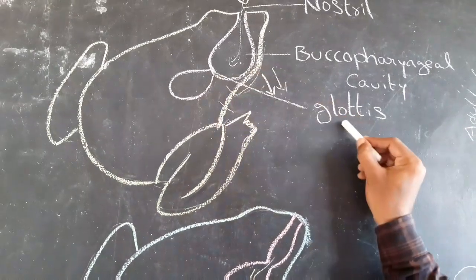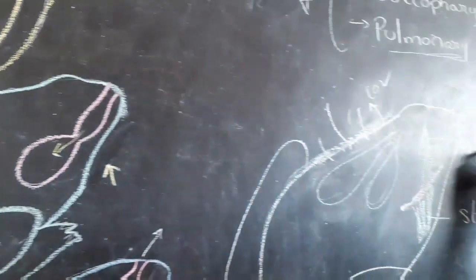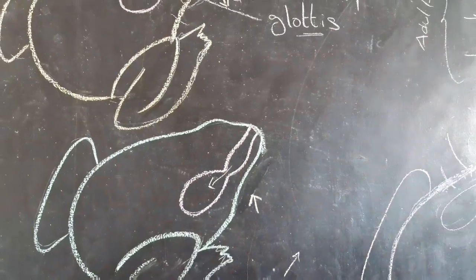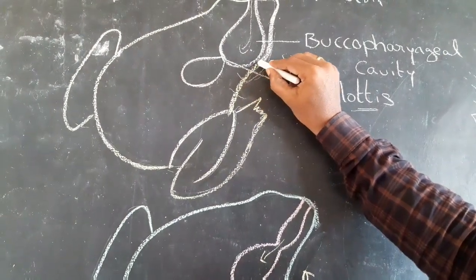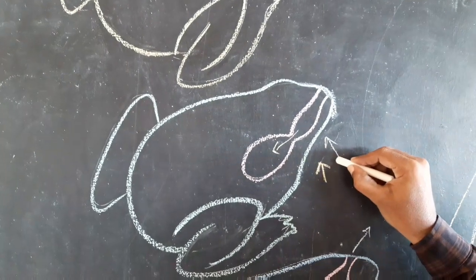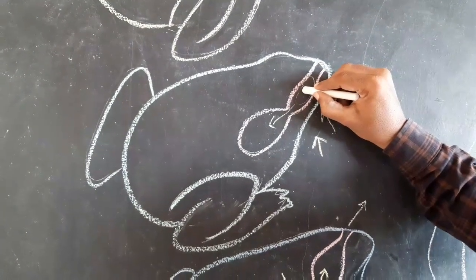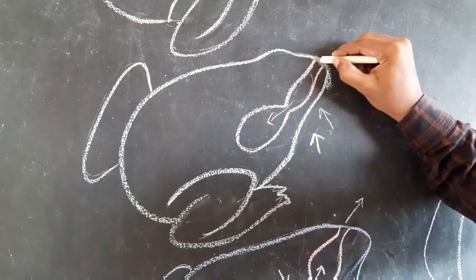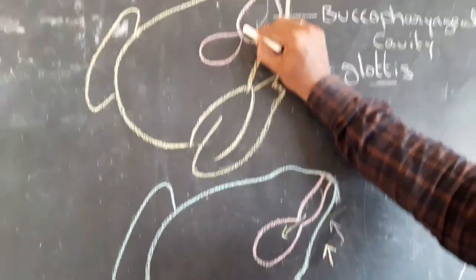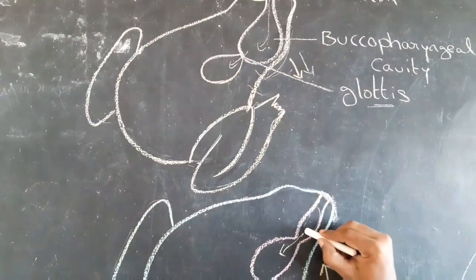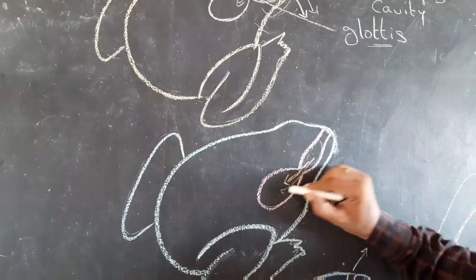The opening of the lung is called glottis. When pterohyoid muscles contract, the floor of the buccopharyngeal cavity elevates and nostrils are also closed. Due to the high pressure of the buccopharyngeal cavity, the glottis opens and air enters into the lungs through the buccopharyngeal cavity.